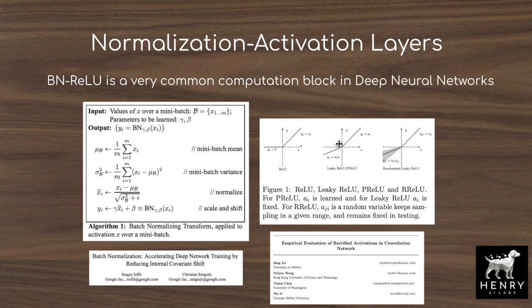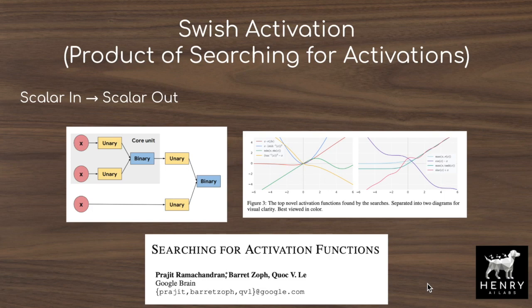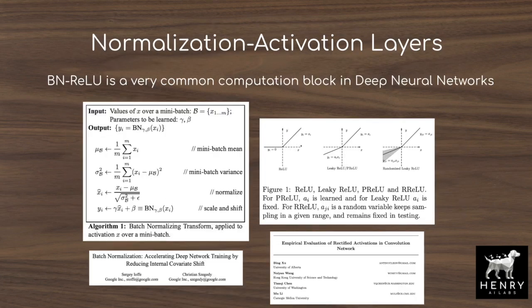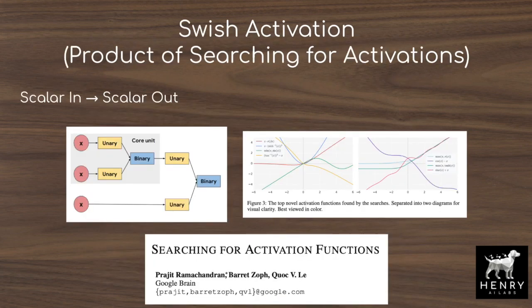This paper explores a way to automatically search for a better construction of this kind of layer for training deep neural networks, targeting performance gains and inference speed. A somewhat similar prior study in AutoML searched for activation functions, producing the Swish activation — a scalar-in, scalar-out activation. That search used reinforcement learning to find unary operations like absolute value or squaring, and binary operations like addition or subtraction. The present study is looking at a much more general layer: tensor-in, tensor-out, rather than just scalar-in, scalar-out.